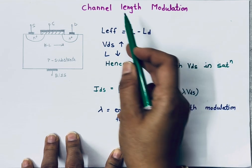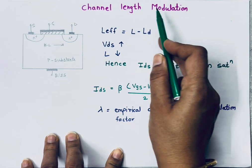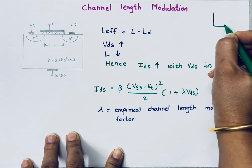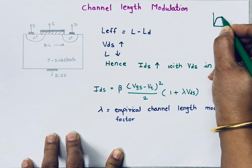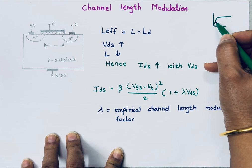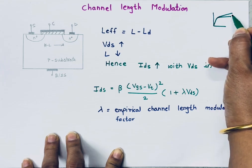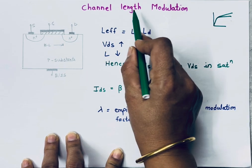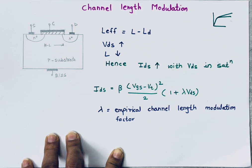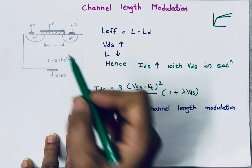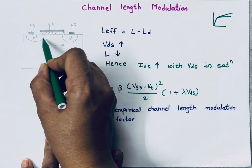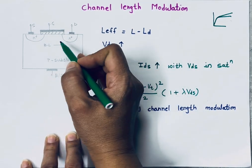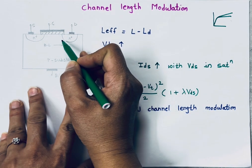Now let's discuss channel length modulation. In the saturation region, ideally the current must be constant, but it is not — it increases, and it increases because of channel length modulation. Channel length modulation means the length of the channel changes with the applied voltage.